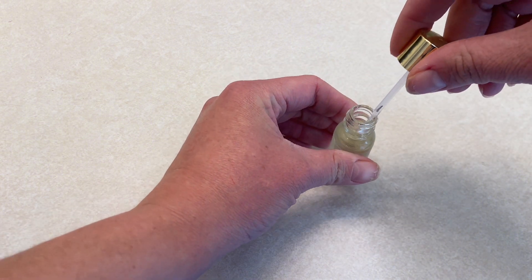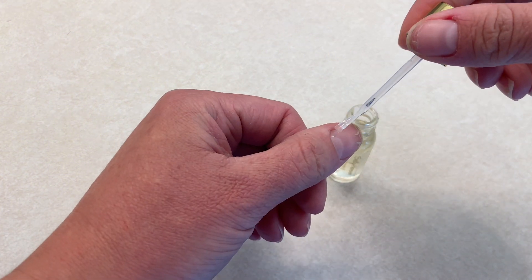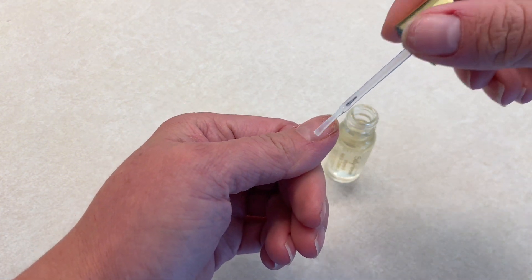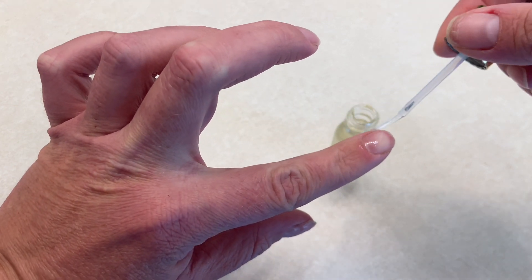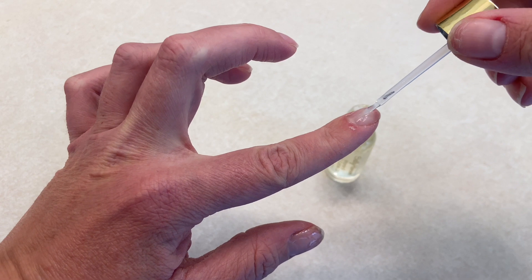You apply it just like nail polish. You can put it directly on your nails as well as on your cuticles. You can see I have some cracking on this thumbnail and around the edges where my cuticles have been picking and peeling.